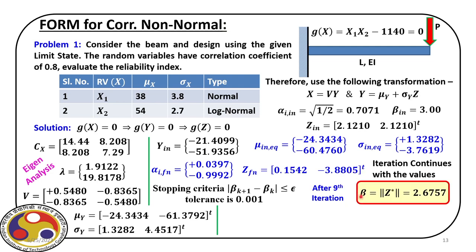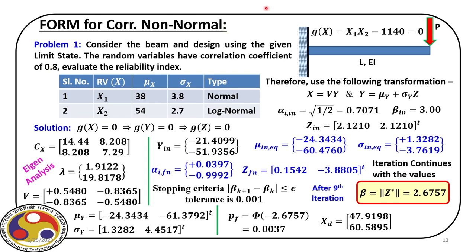At the end of the 9th iteration, beta equals 2.6757, giving a probability of failure Pf equal to phi of minus beta, which is 0.0037. This is for two random variables — x1 following normal distribution and x2 following log-normal distribution — correlated with a coefficient of 0.8. The design point is xd equal to 47.9198 and 60.5895.